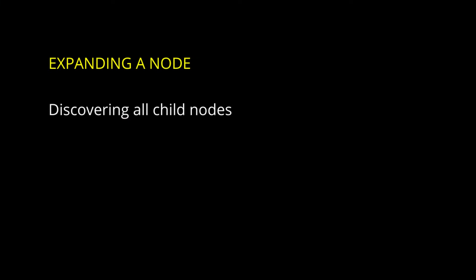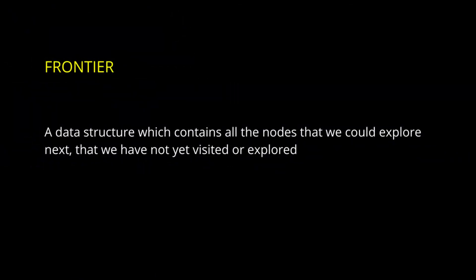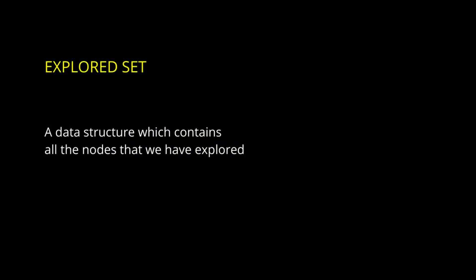Discovering all child nodes of a node is known as expanding the node. The frontier is a data structure which contains all nodes that we could explore next, that we have not yet visited or explored. The explored set is a data structure which contains all the nodes that we have explored.